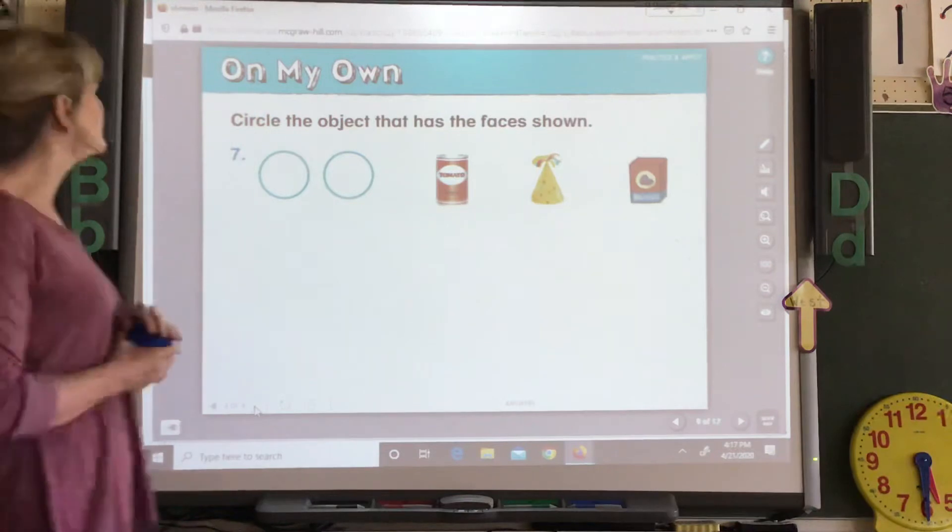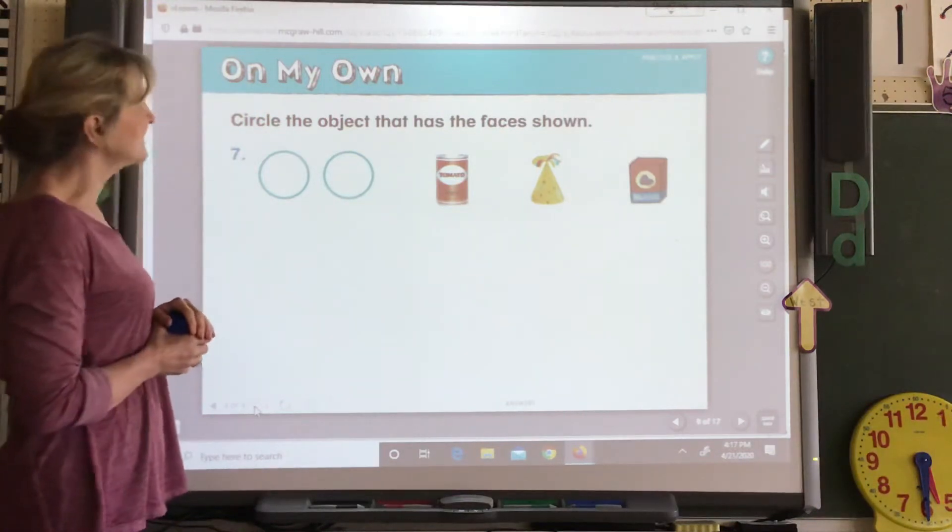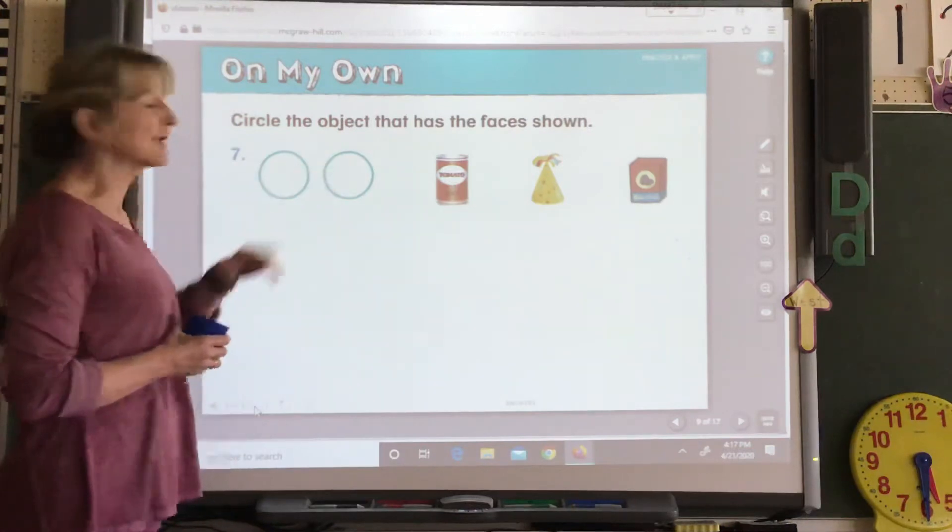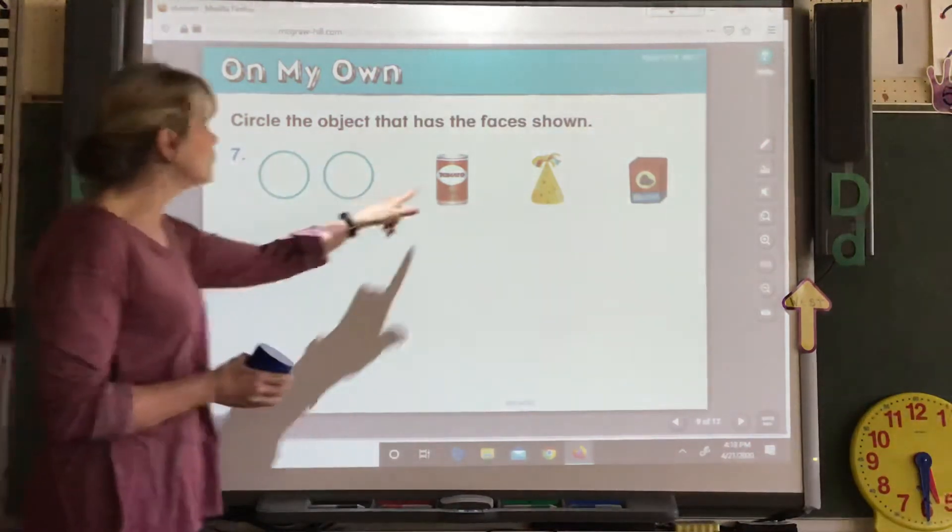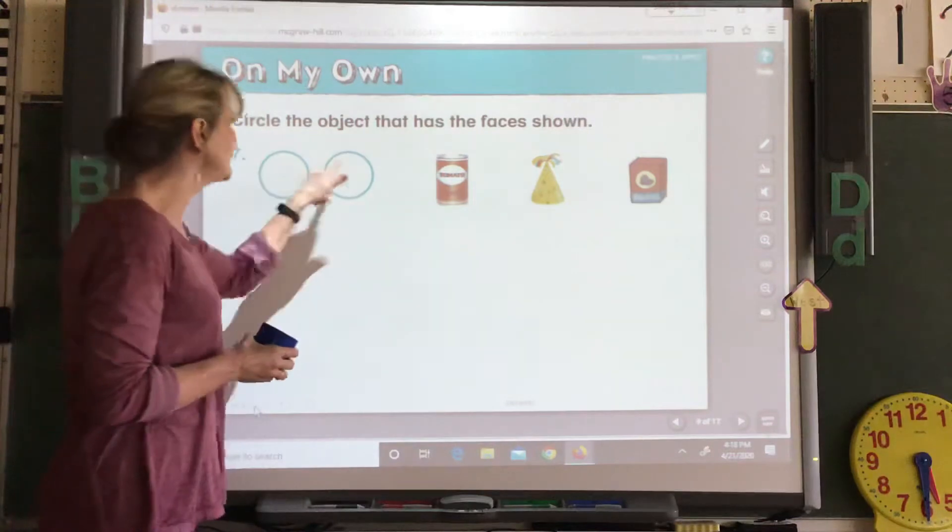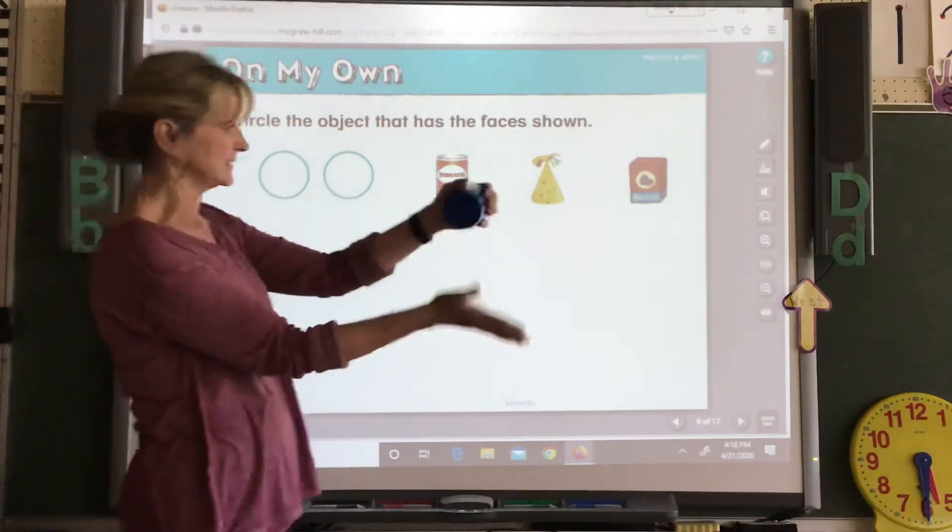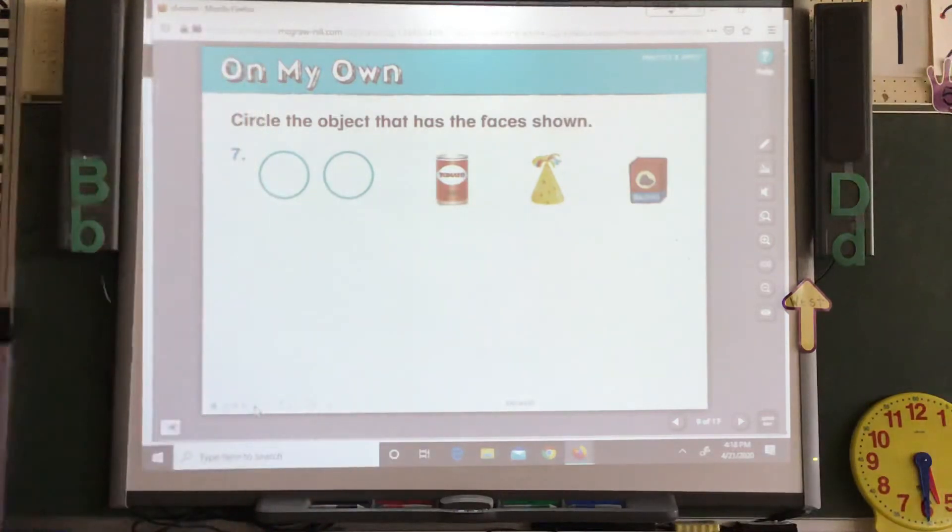All right. It says, circle the object that has the faces shown. There are 2 faces that are shaped like circles. Which of those objects would have 2 faces shaped like circles? Remember the faces. All right. Let's go to the back.